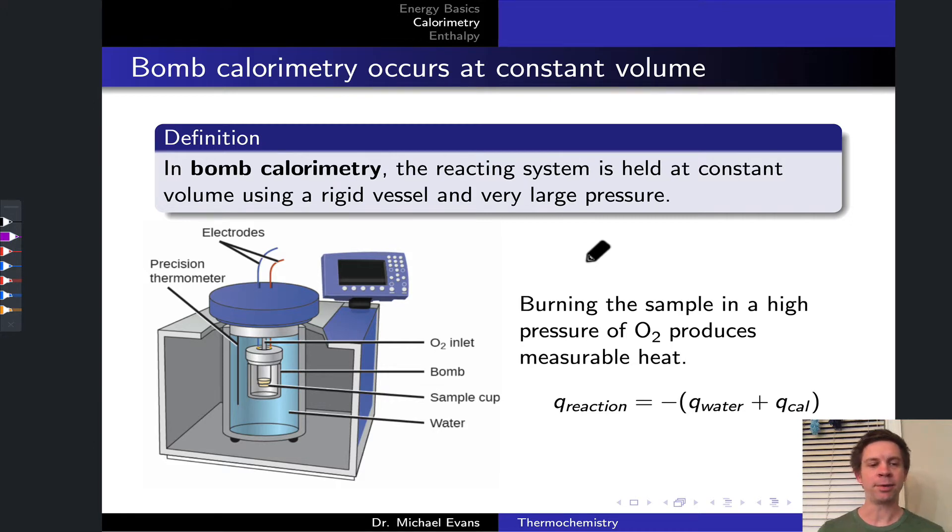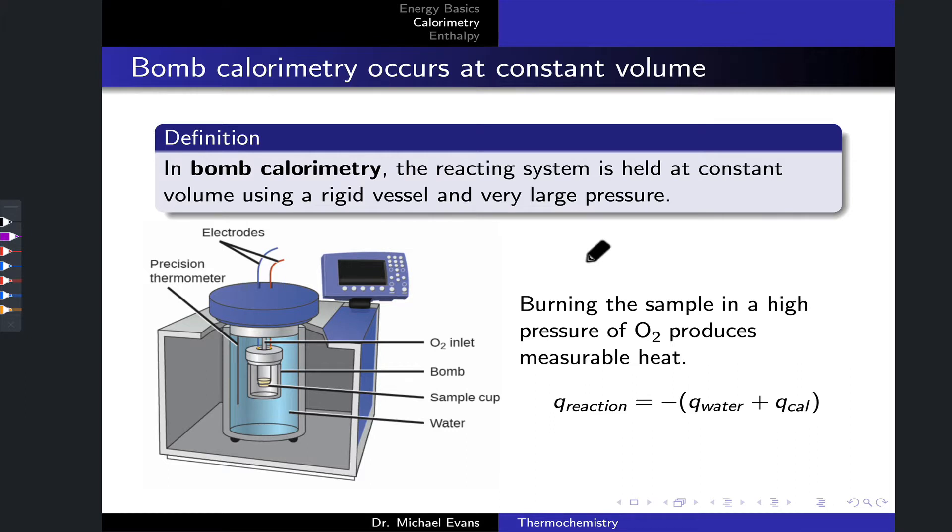The idea behind bomb calorimetry is we want to use a well-insulated vessel to run the reaction so we can keep a handle on the heat flows. But the reaction vessel is completely sealed and rigid. This leads to a situation where the reacting system is held at constant volume. Volume does not change. Very large pressure is also used to prevent pressure fluctuations if a gas is generated.